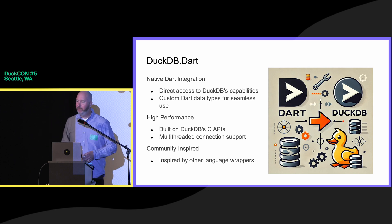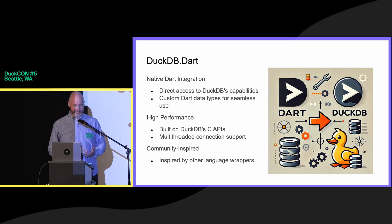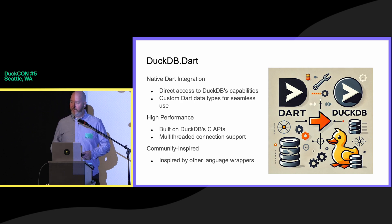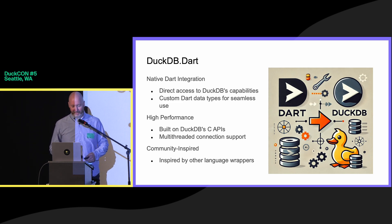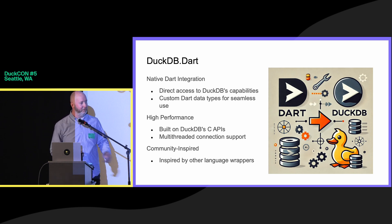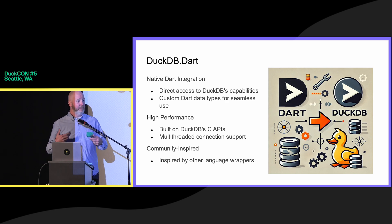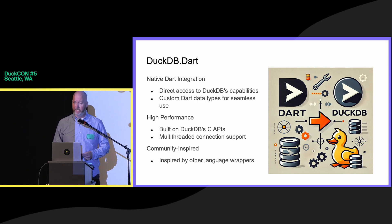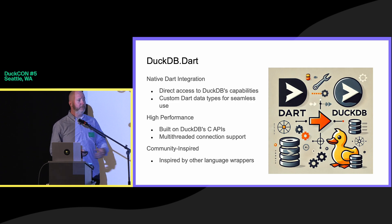Let's talk about DuckDB.dart and what makes it so special. It's a native Dart integration for DuckDB, giving you direct access to the power of DuckDB from Dart. We've introduced custom Dart data types to make that integration seamless — there are types in DuckDB that aren't natively in Dart, and we'll go over some of those. It's built on the C API, so we get a lot of performance out of that. Dart is really good at FFI integration — calling out to C libraries. We've also added some affordance for multi-threading and concurrency.